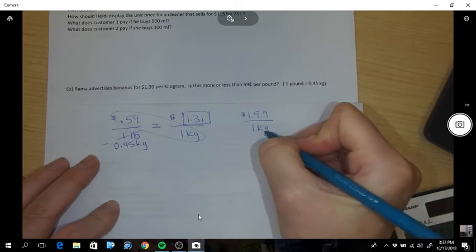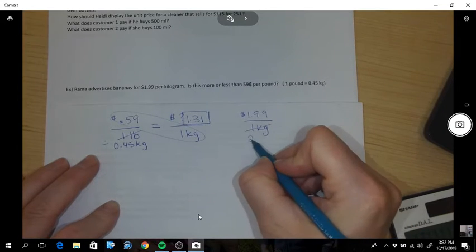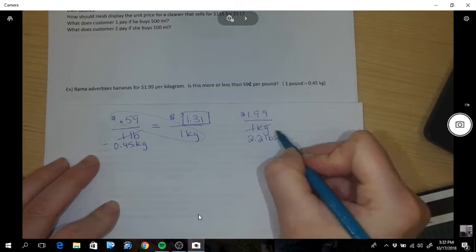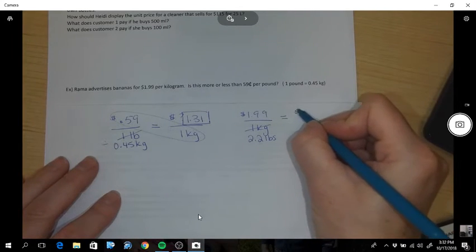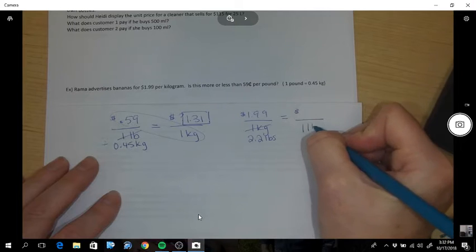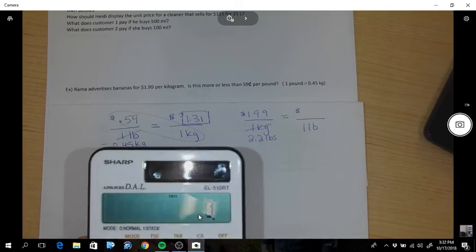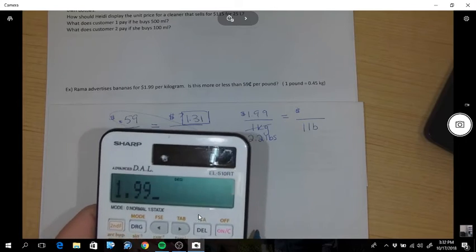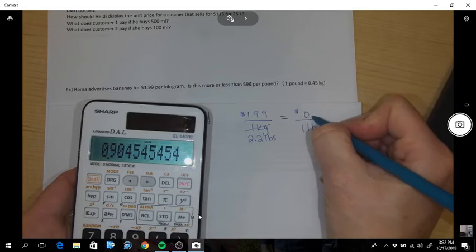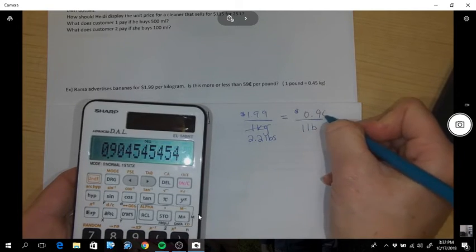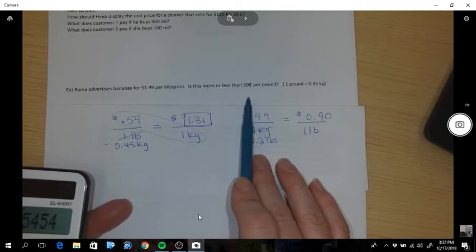About 2.2 pounds per 1 kg. So what is that? And you could have replaced that with 2.2 pounds, knowing that conversion. And then you could have said, what is that per 1 pound? So that's the other way you could have done it. So $1.99 times 1, don't need to do, divide it by 2.2. So that comes out to be 90 cents per pound which is more expensive than 59 cents per pound.